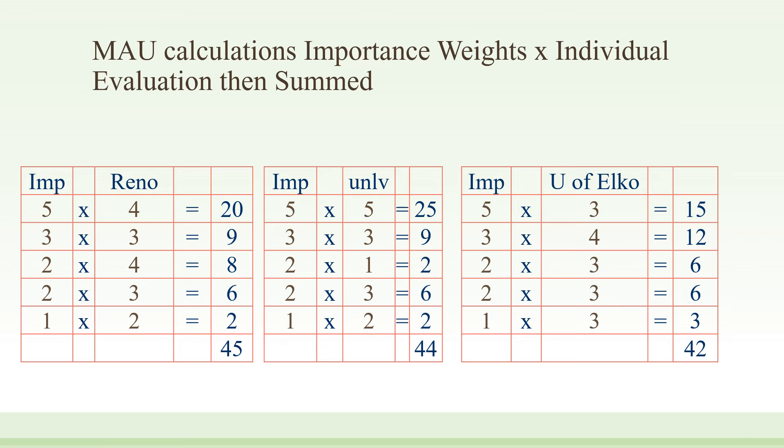But there is a second alternative: reduce the importance of that attribute. If you score really low on an attribute compared to your competitors, you can either try to get better on that attribute or make it less important. In this case, placement importance is a two. But if we could convince parents and students that placement was even less important, more like a one, UNLV would then score higher than Reno or the University of Elko on the total score.